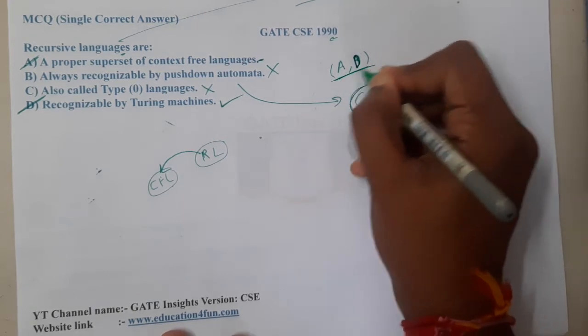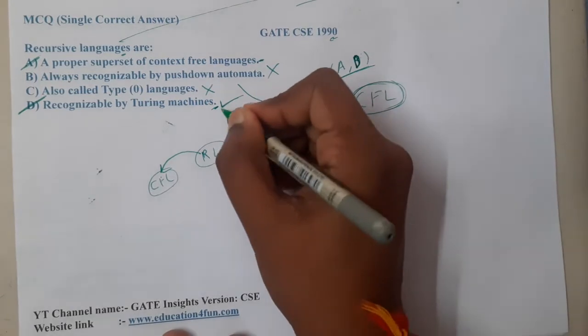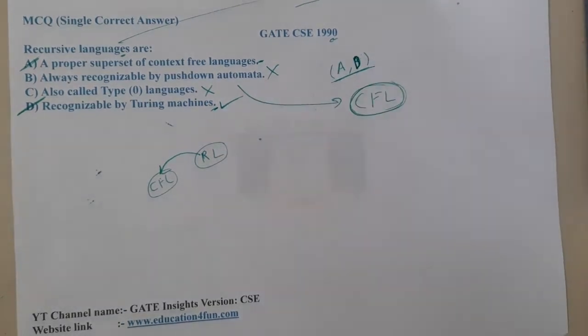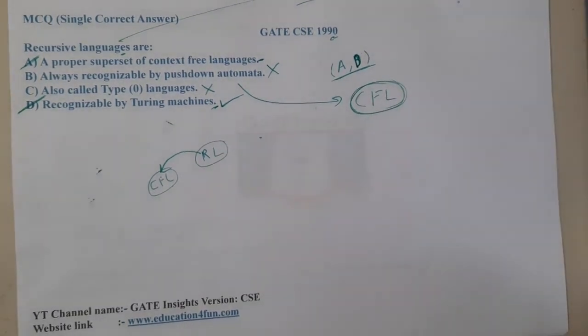If this question has been asked now, most probably I'll be keeping D as the correct answer if it is asked as a single select question. Now I hope everyone got a clear idea with respect to this.